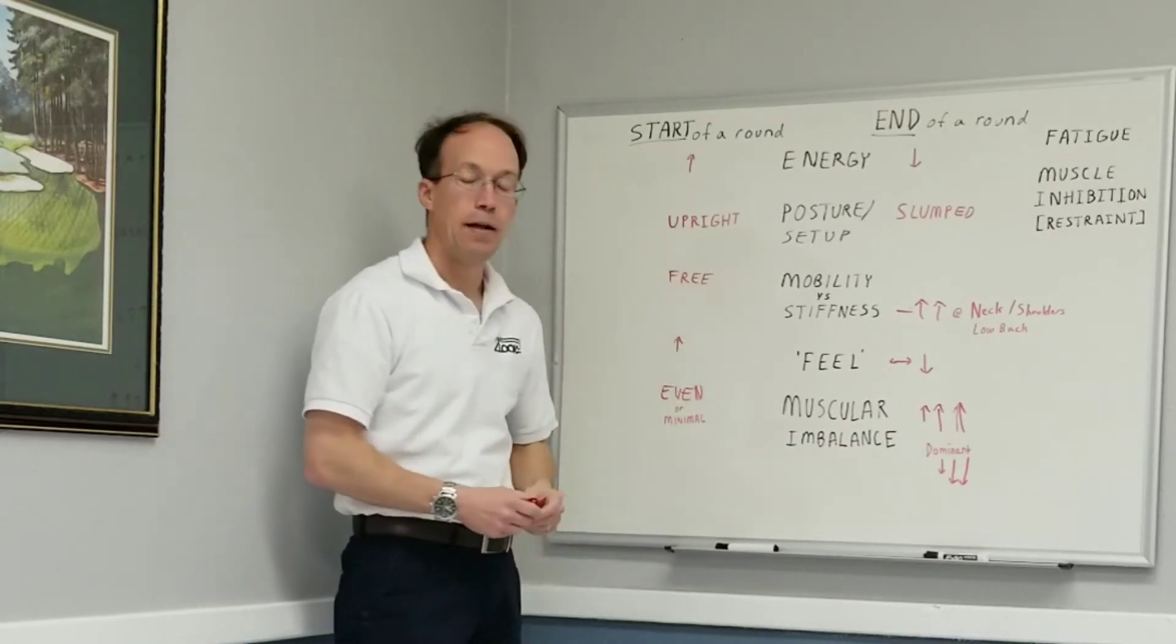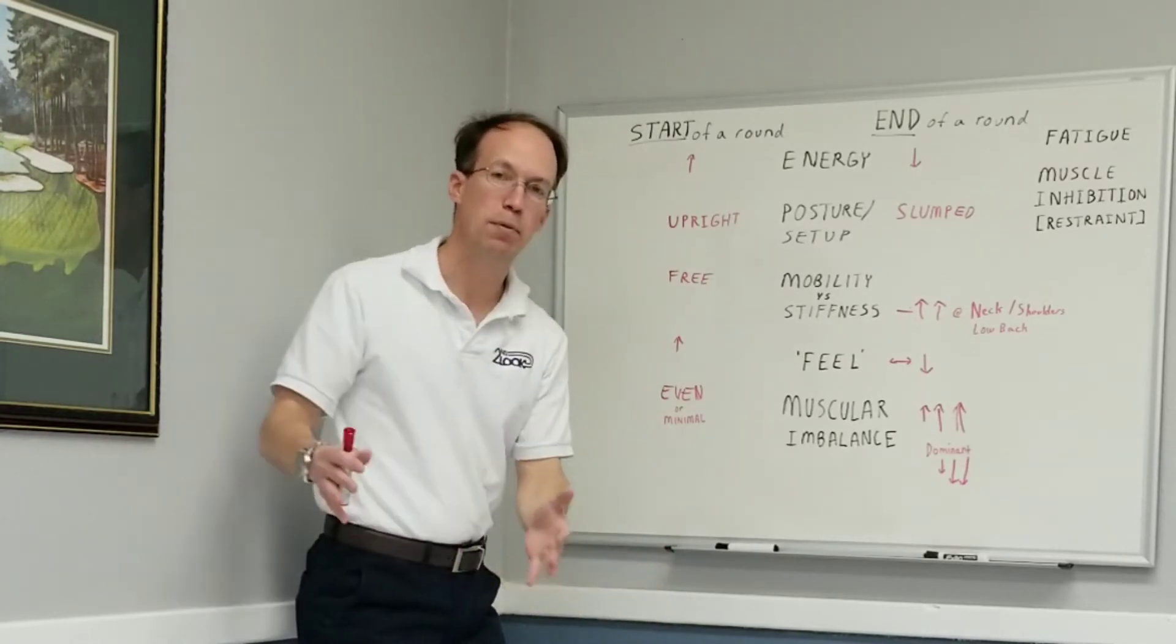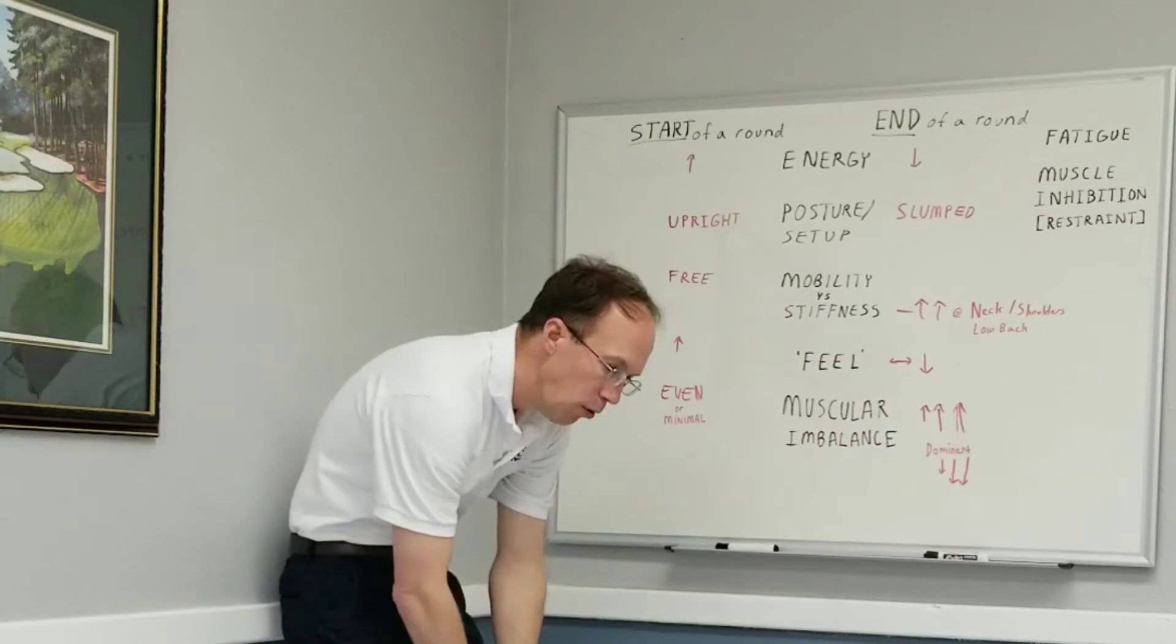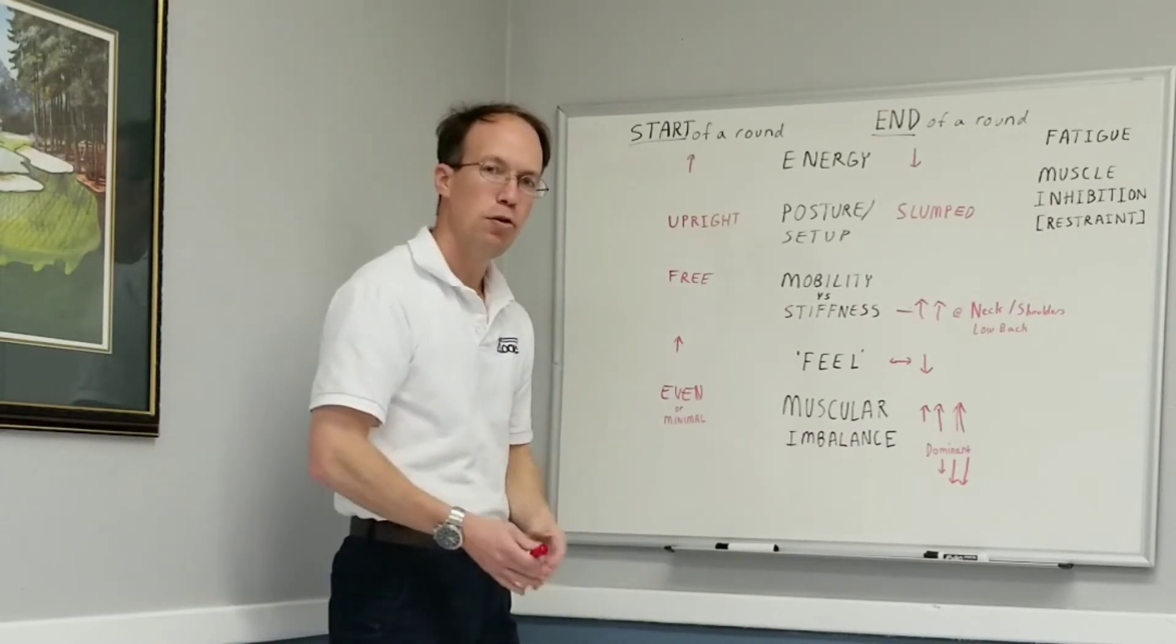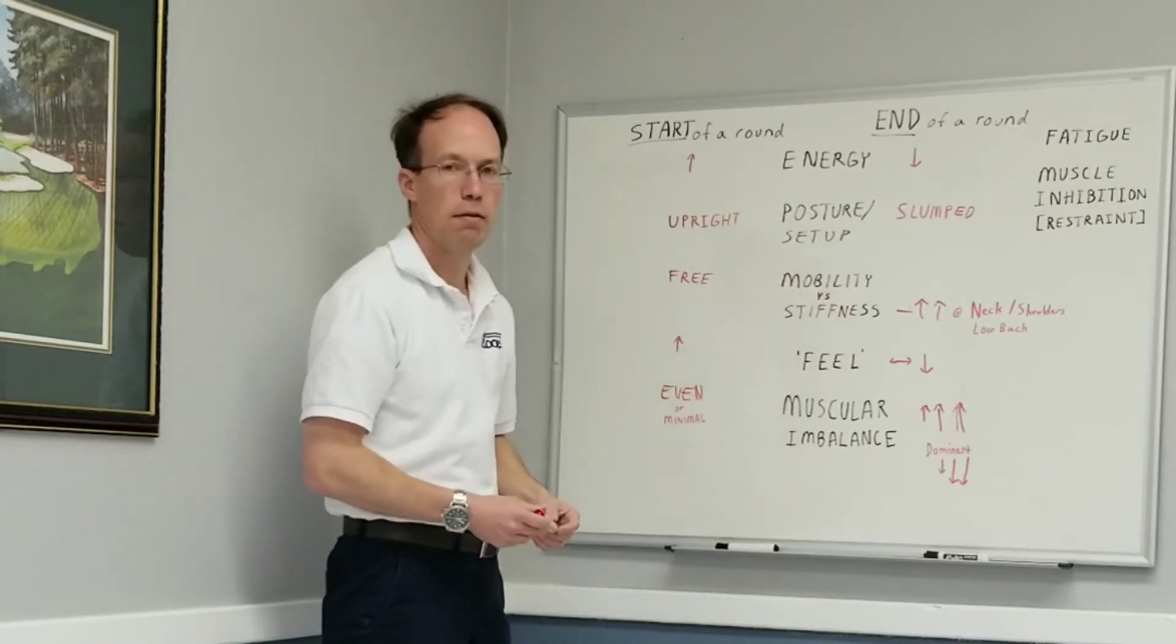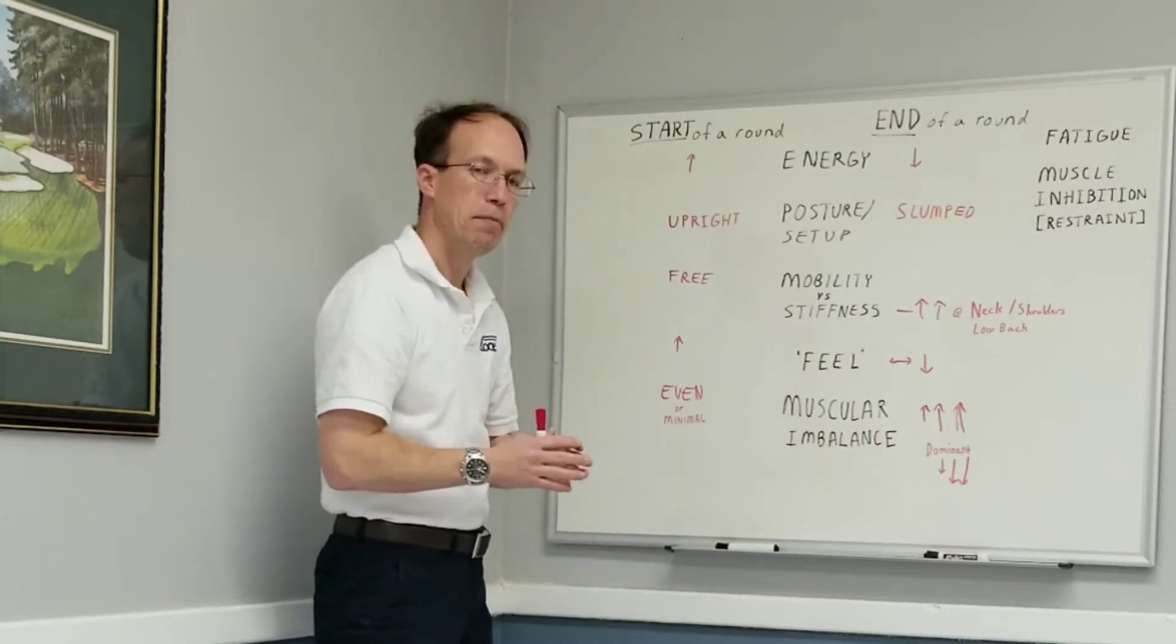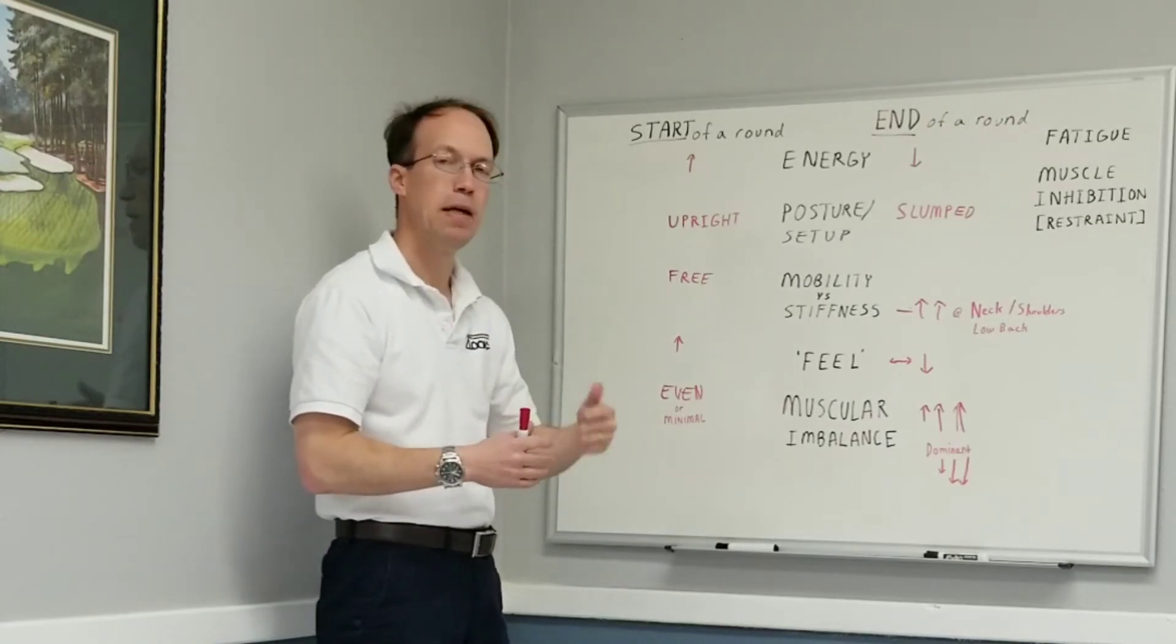If you notice at the start of your round, you have a very upright posture. You're able to keep your positions well. At the end of a round, you're a little bit slumped. Again, this isn't going to be an obvious loop, but small changes that lead to swing changes and performance change can show up because of your body through the nervous system influencing the speed at which you can work.